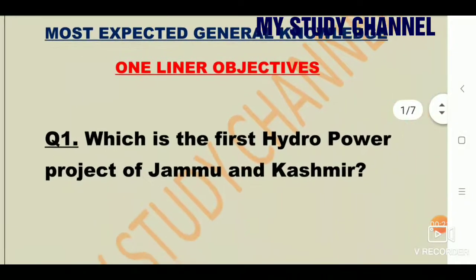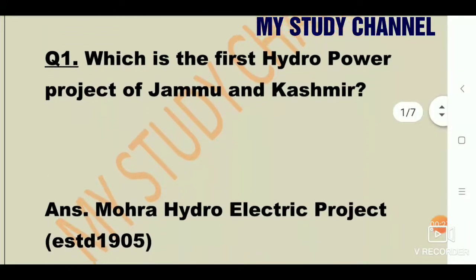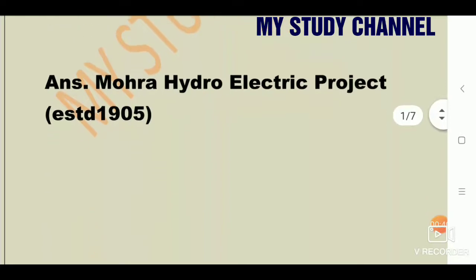Question number 1: Which is the first hydro power project of Jammu and Kashmir? The answer is Mohara Hydro Electric Project — it is the first hydro power project of Jammu and Kashmir, established in 1905.